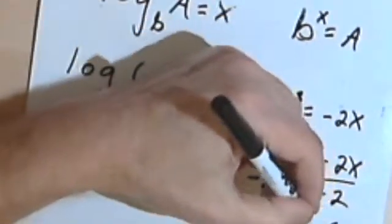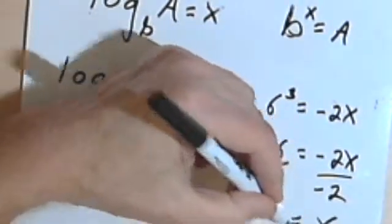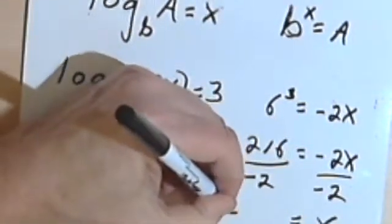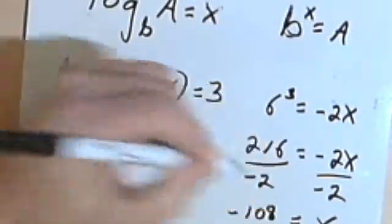And we're going to find that x equals 216 divided by negative 2 is negative 108.